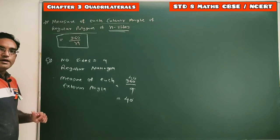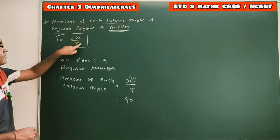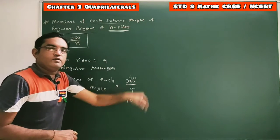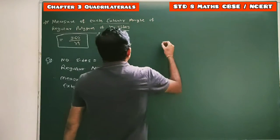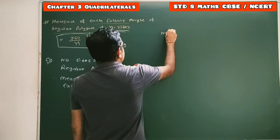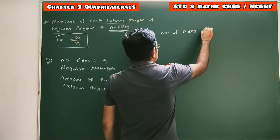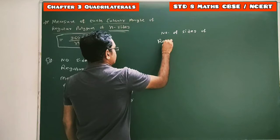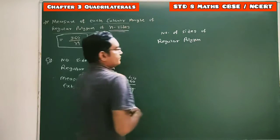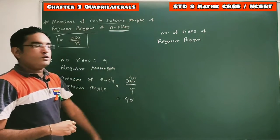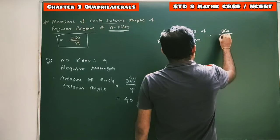By the same approach, we can also find the total number of sides when the measure of each exterior angle of a regular polygon is given. We can write the formula in another form: the number of sides of a regular polygon equals 360 degrees divided by the measure of each exterior angle.